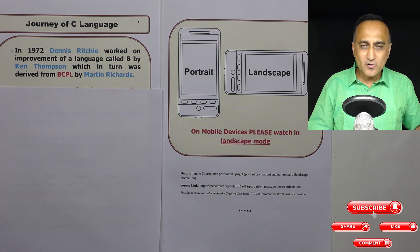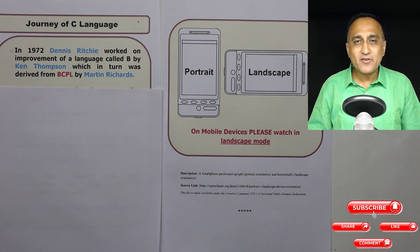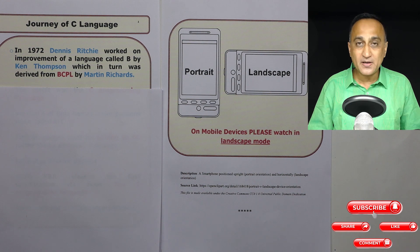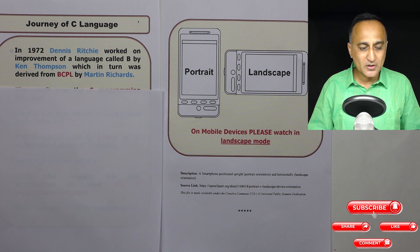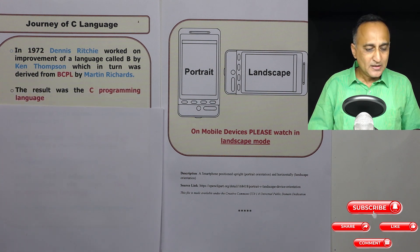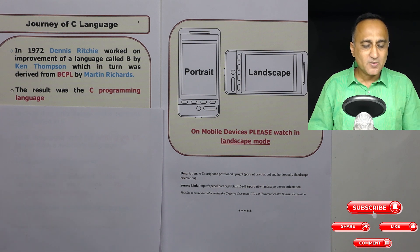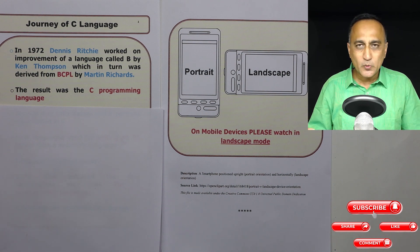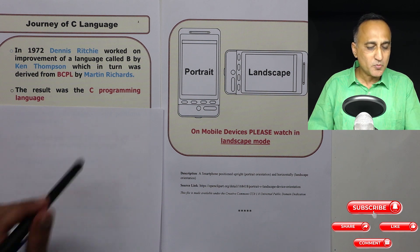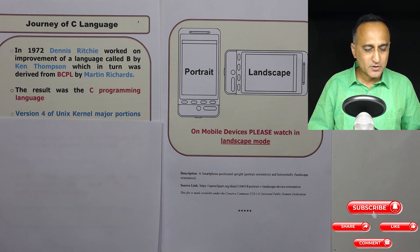A lot of these developments were related to work on the Unix operating system as well as on the hardware machine called the PDP-11, which we discussed during the generation of computer hardware development. The result of Dennis Ritchie's work on improving the B language turned out to be the C programming language.